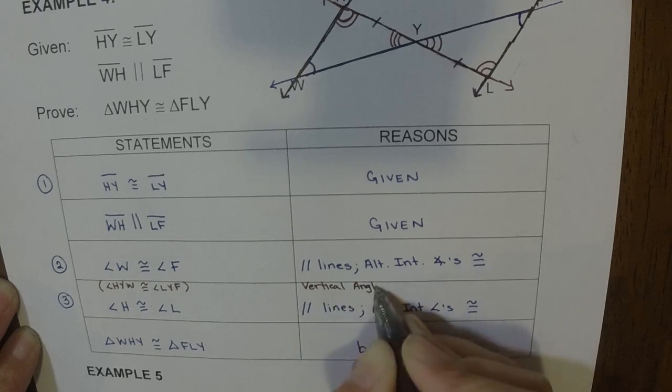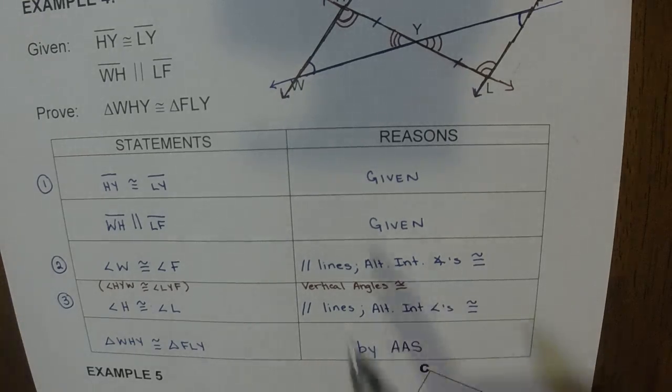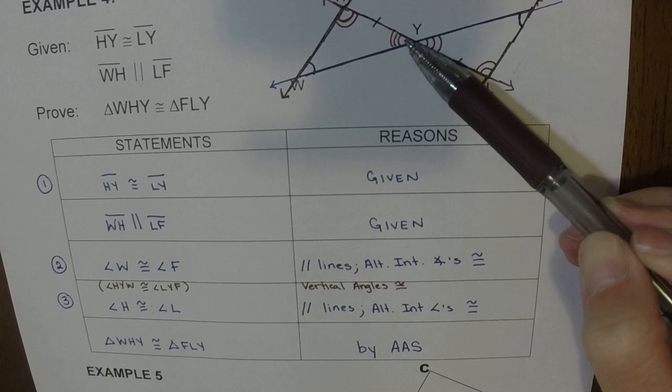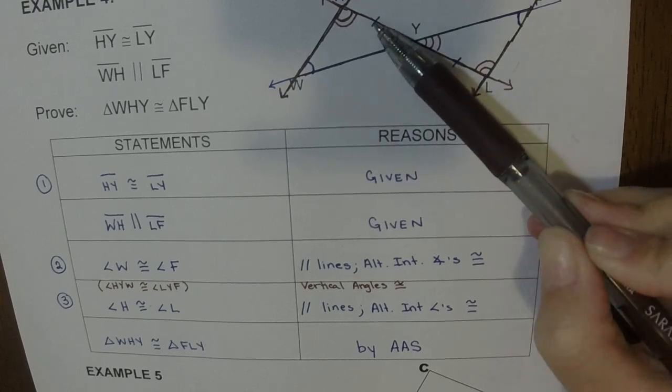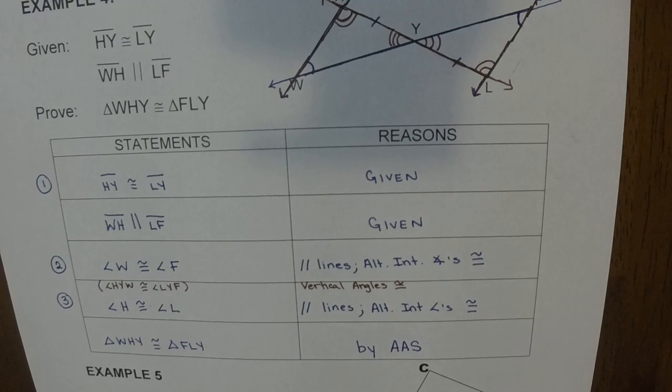So there's not always just one way to solve a proof. And if I used this one, it would have been angle, angle, side, or angle, side, angle. So again, there aren't really correct or incorrect orders or answers. Well, there are incorrect answers, but there are different ways to do it and arrive at the same answer, I guess, is a better way to say that.